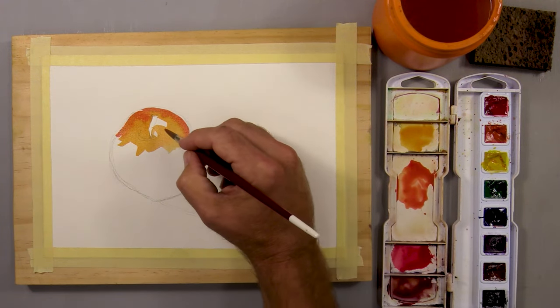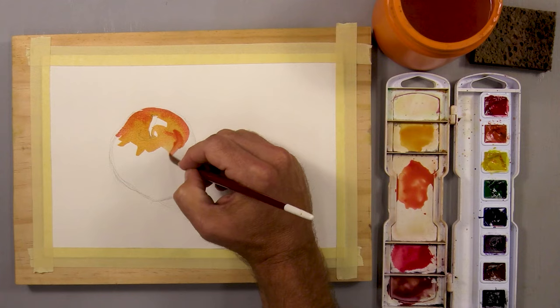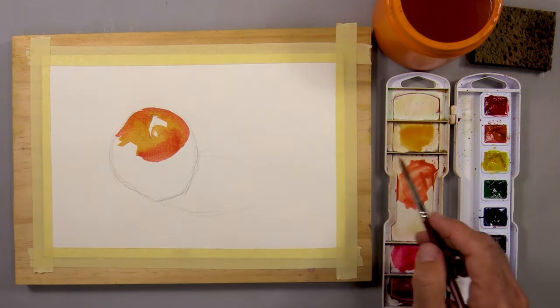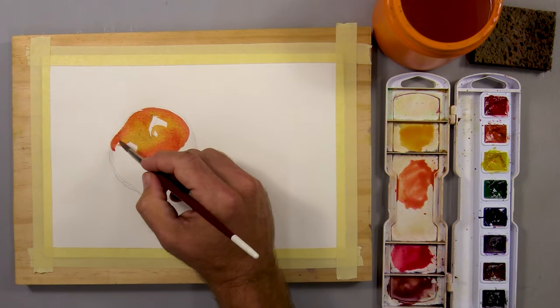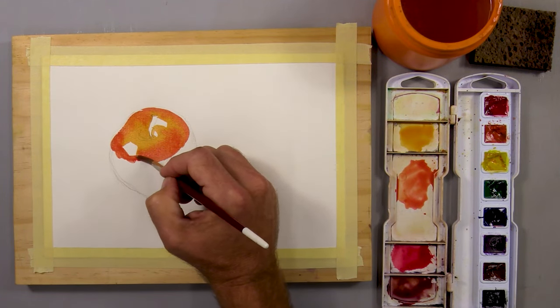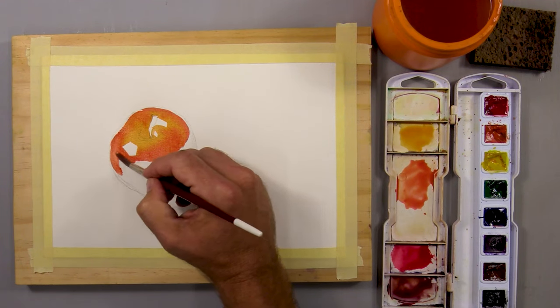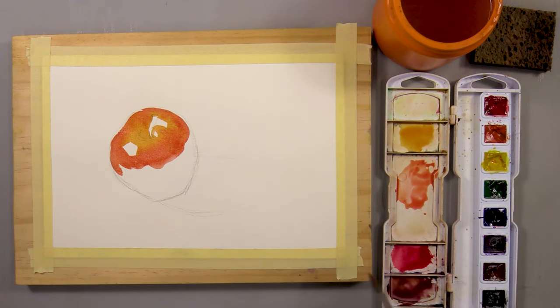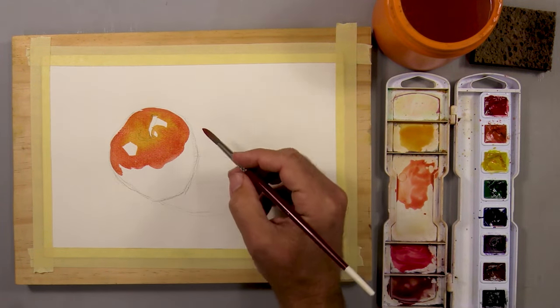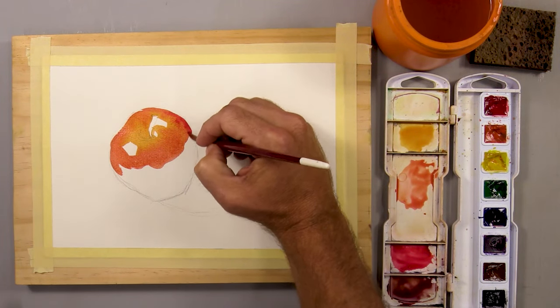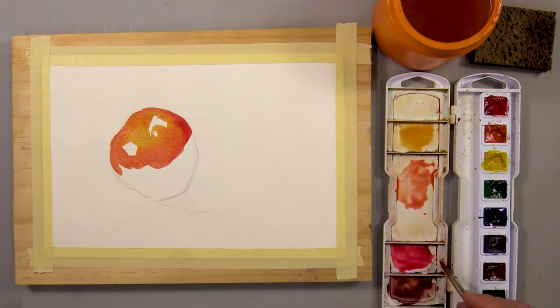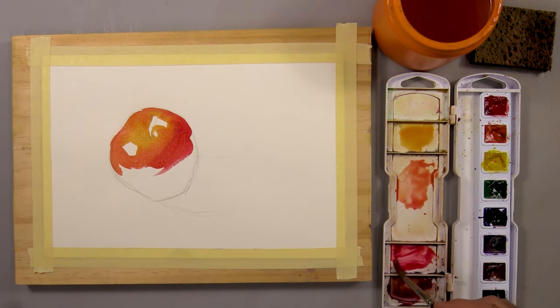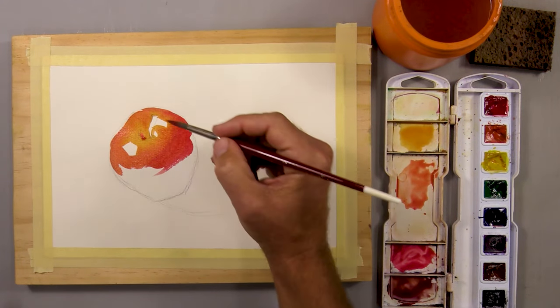I see that up toward the top and around the sides of the apple. I'm painting that in while the previous color is still wet. That way those two colors bleed and blend together. As I work my way down I notice that the apple gets much more red and darker. So I switch over to my pure red color. I add in a few dabs of it around the top edge of the apple and next to the stem of the apple.